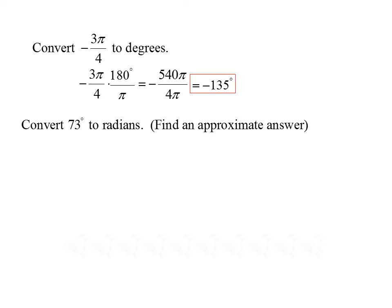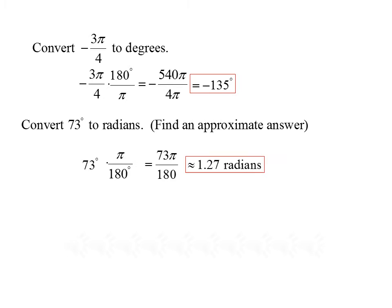For our final conversion example, we want to convert 73 degrees to radians and find an approximate answer. When looking for an approximate answer, take whatever you get and put it in your calculator to evaluate it. If it asks for an exact answer, leave things in terms of π. We start with 73 degrees and multiply by π divided by 180, giving us 73π divided by 180. This is our exact answer — we can't reduce it further. Putting it in our calculator gives us approximately 1.27 radians.